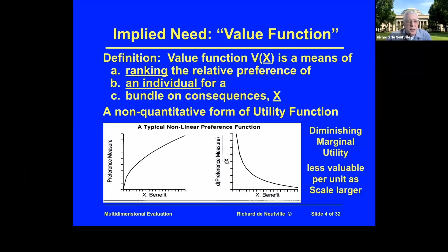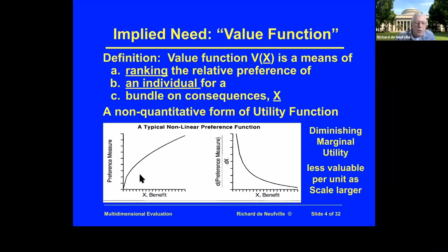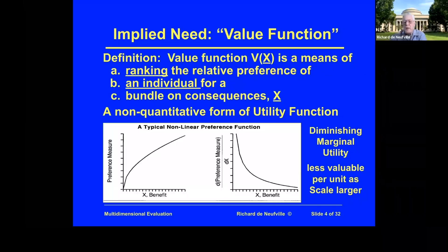The base idea is that you have a benefit drawn on the horizontal scale and a measure of preference. Looking at the left-hand side, if you don't have any, just having some can be important to you. Then if you have more, the gain for each additional unit may be less and less. We can think about that as the unit preference for each additional unit of benefit — this general shape known as diminishing marginal utility, where the unit value is less as we get more of it.